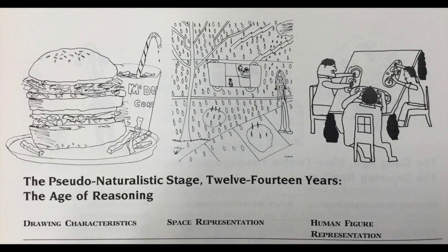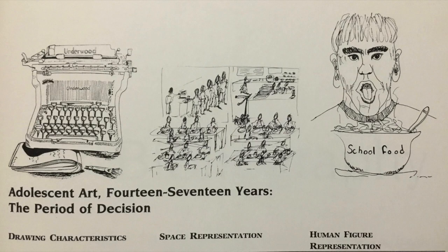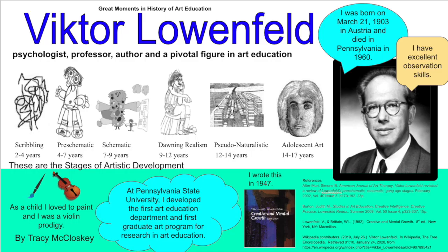Around this time, the world was starting to care about and put focus on art created by children. In 1936, finger paints were introduced in America in elementary classrooms by Ruth Fashen Shaw, who developed them in 1931. Then in 1937, the Museum of Modern Art was given a grant to work with neighboring schools and displayed children's artwork within the museum.